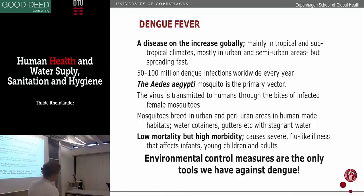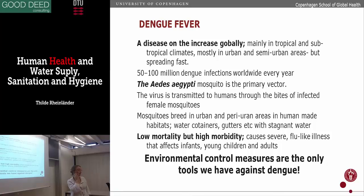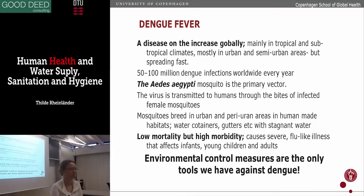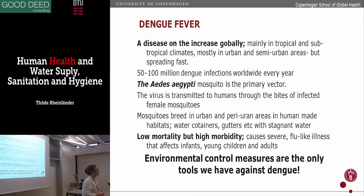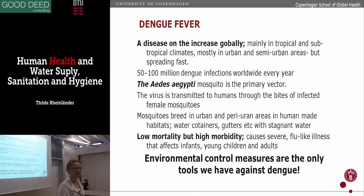Dengue has a low mortality, so I think a lot of programs haven't really thought much about it because not so many people die from it. But you have a very high morbidity — lots of sickness days, even months. You can be sick for months. It's also called break bone fever because you feel like all your bones are hurting. The only thing you can do is take some paracetamol and go to bed. The only tool we have is to ask environmental engineers to do something about the vector — vector control is really the only thing in the toolbox for doing something about dengue.